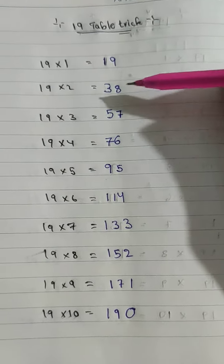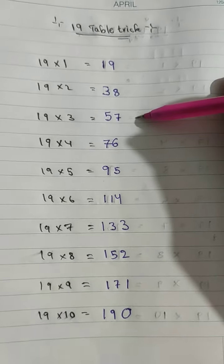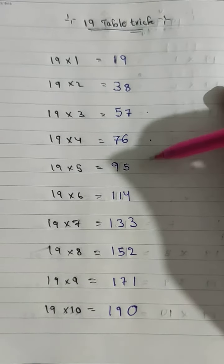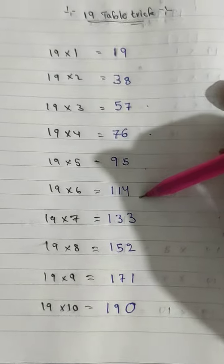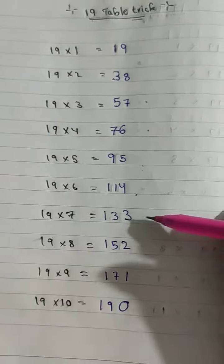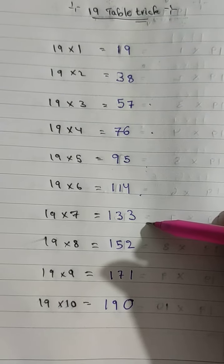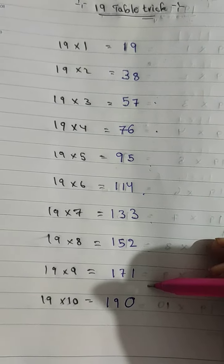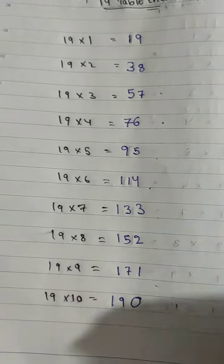19 times 1 is 19, 19 times 2 is 38, 19 times 3 is 57, 19 times 4 is 76, 19 times 5 is 95, 19 times 6 is 114, 19 times 7 is 133, 19 times 8 is 152, 19 times 9 is 171, 19 times 10 is 190. Thank you.